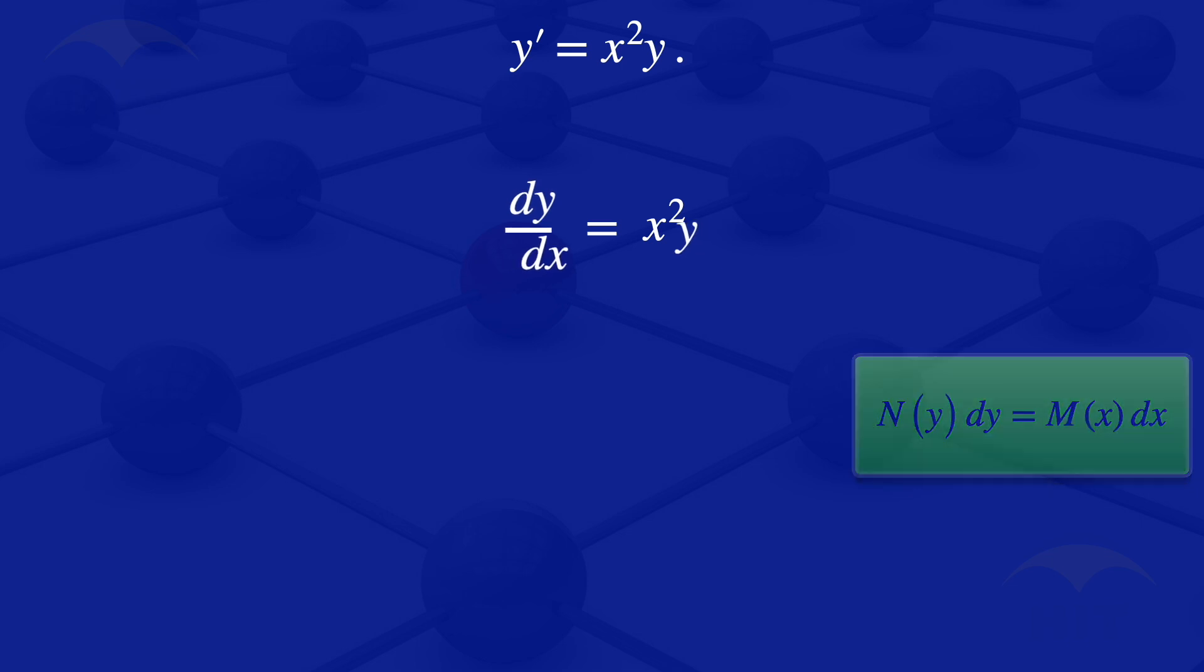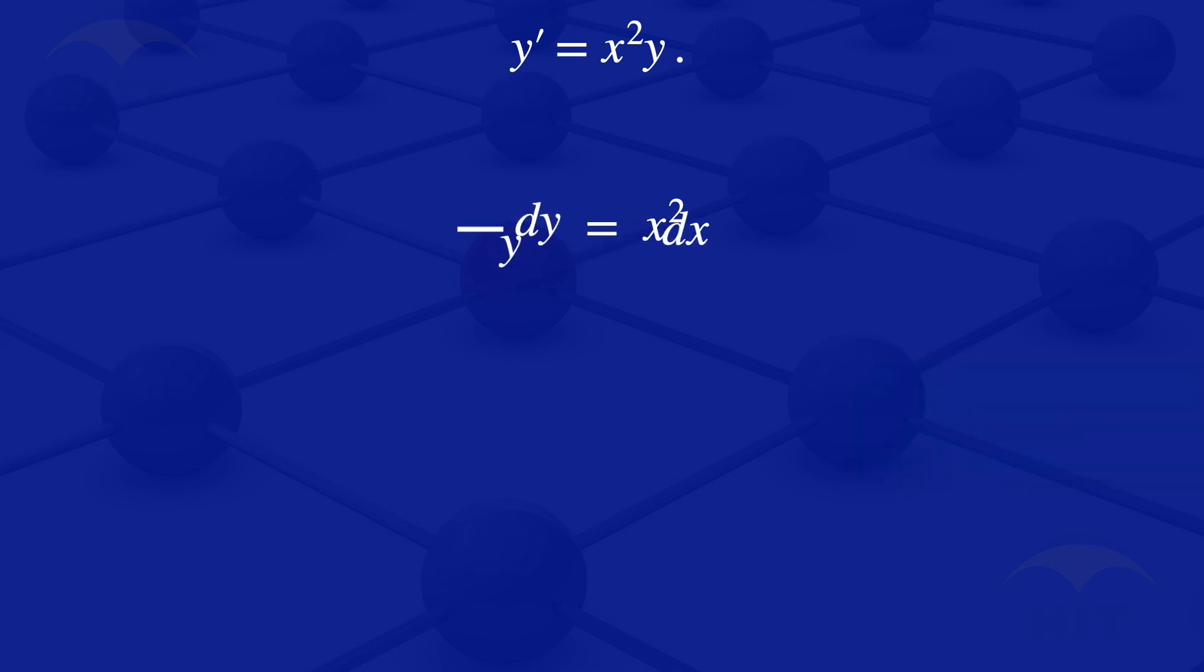So what we would have there, we'd be having 1 over Y multiplied by DY equals X squared DX. Then integrate both sides. So we'd have the integral of 1 over Y with respect to Y equals the integral of X squared with respect to X.